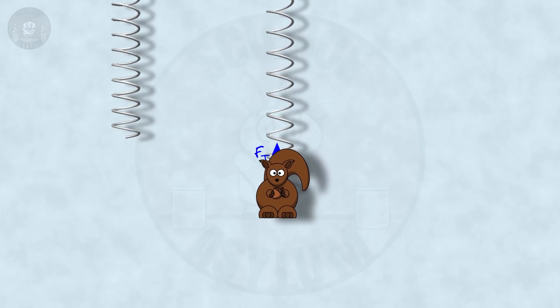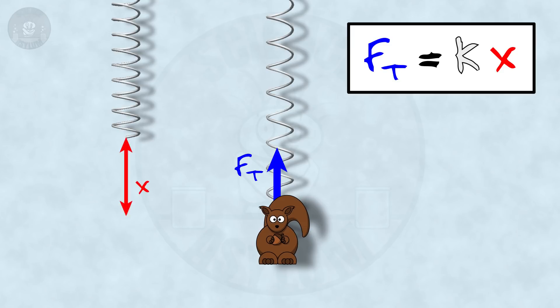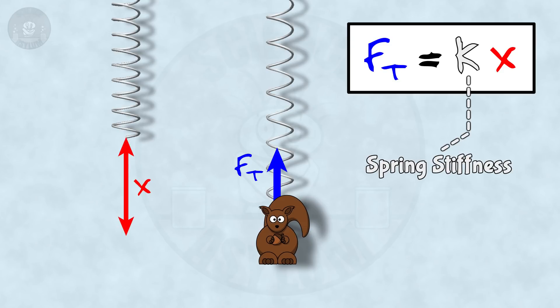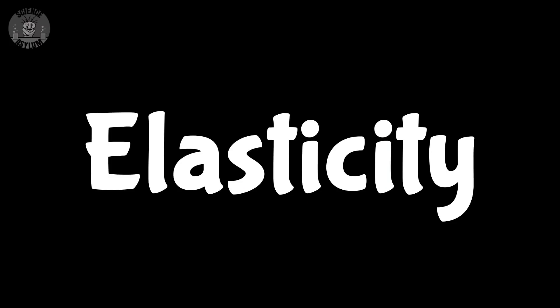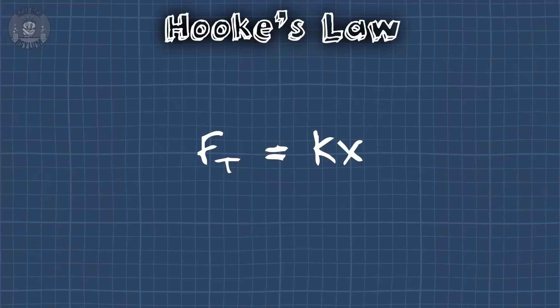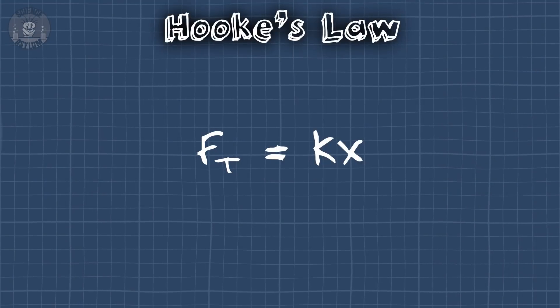Anyway, let's talk about elasticity for a minute. We'll start with the easiest example: a spring. The tension in a spring is just a constant times how much it's stretched. We call that constant the spring stiffness, because the bigger it is, the more force it takes to stretch the spring. The stiffer the spring, the less elastic it is. So that constant tells us about its elasticity, which is exactly what we're interested in. This relationship is Hooke's Law.